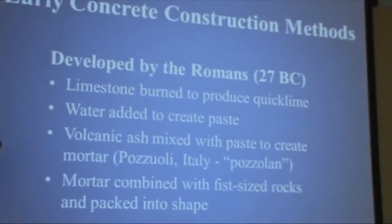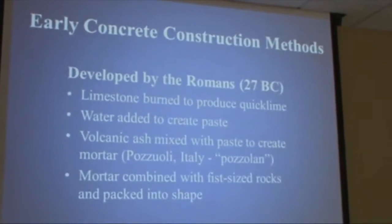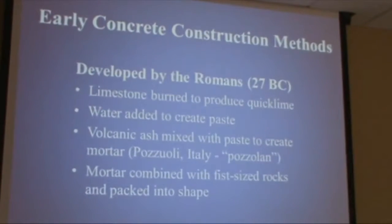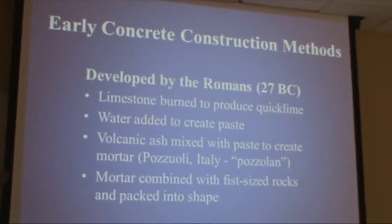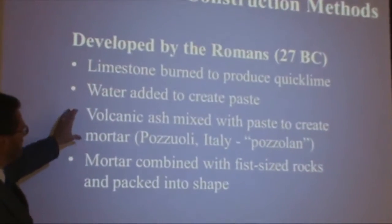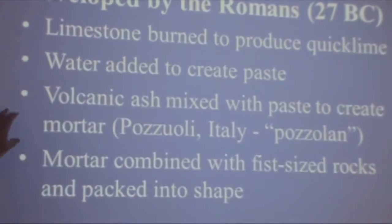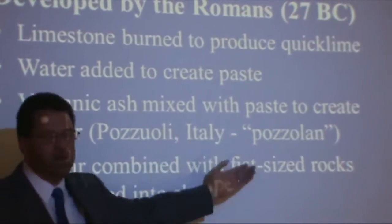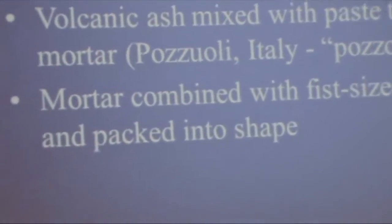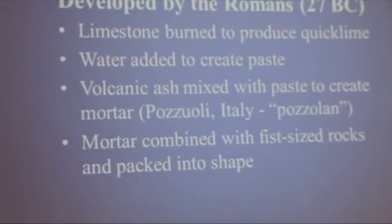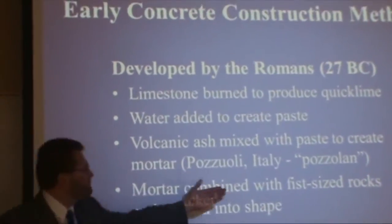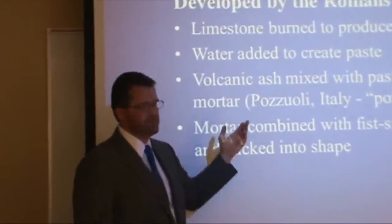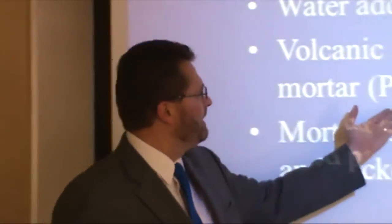It is widely accepted that the Romans actually did use concrete. They started burning limestone to produce quicklime around 300 B.C. Around 27 B.C., they started mixing that quicklime with volcanic ash found in an area called Pozzuoli, Italy — and that's where the term 'pozzolan' comes from. Pozzolan is a mineral admixture used to enhance concrete, and the volcanic ash was chemically similar to modern-day pozzolans.